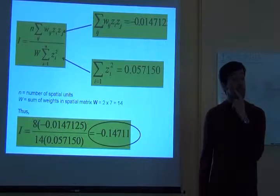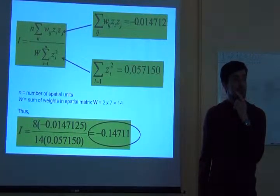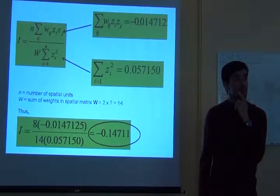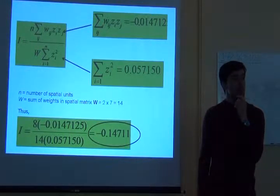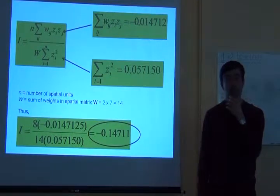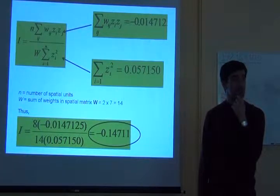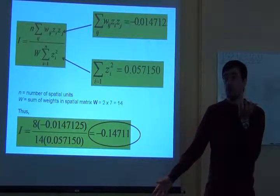It varies from 0 to 1 except that the numerator may be negative. Then it varies from what to what? Negative 1 and positive 1. Perfect.